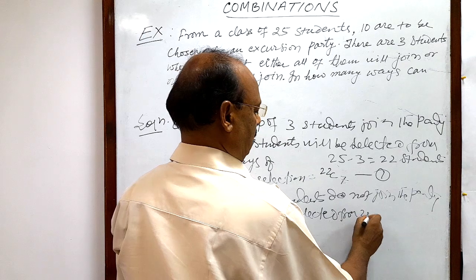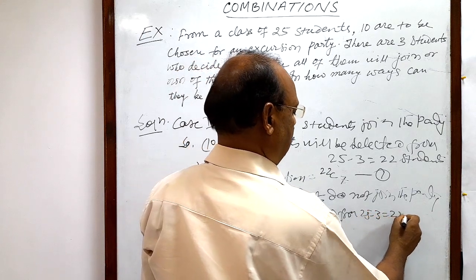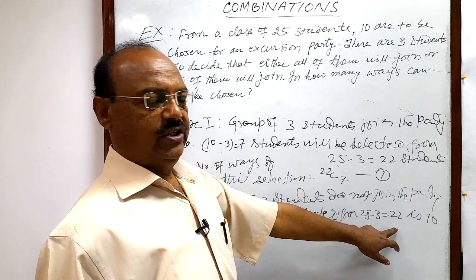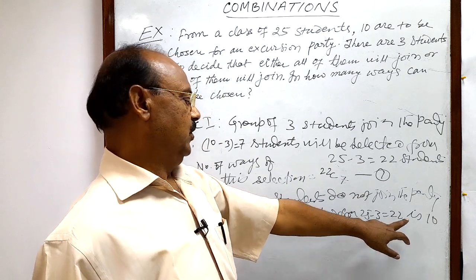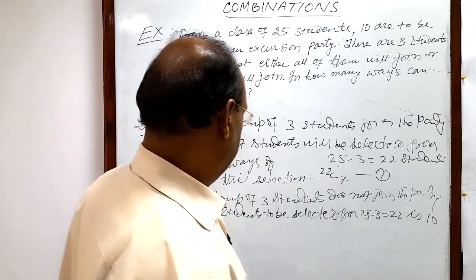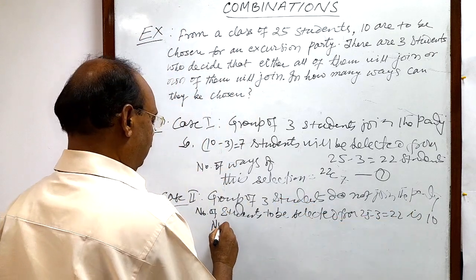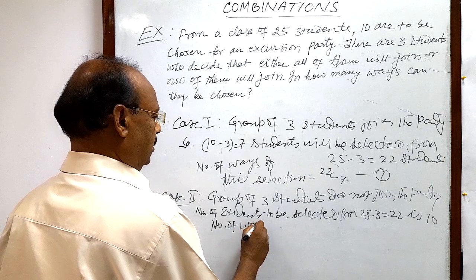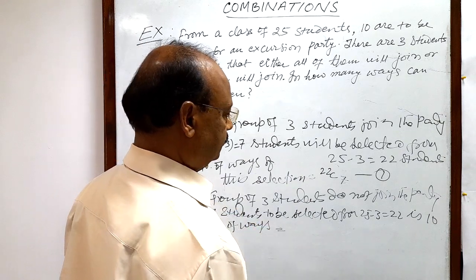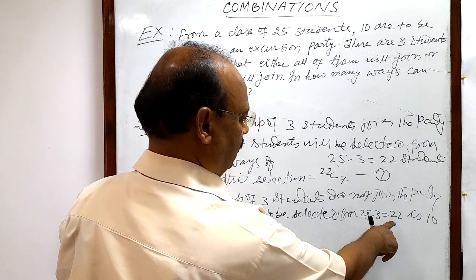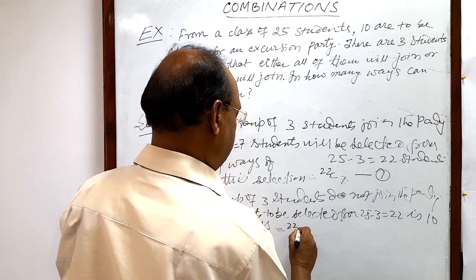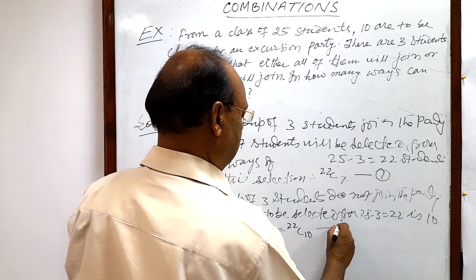In this case, 10 students will be selected from 22 students. Therefore, the number of ways of this selection will be 22C10.